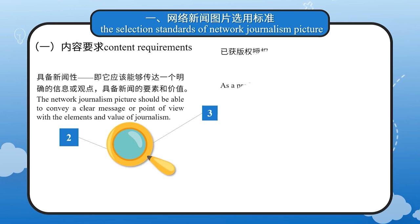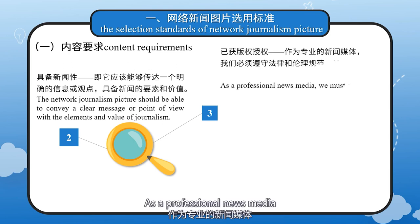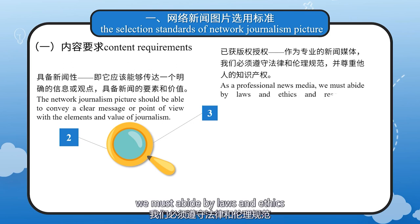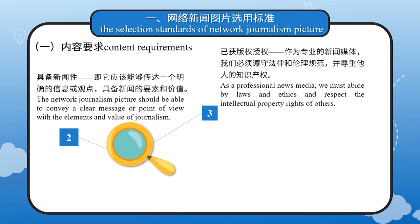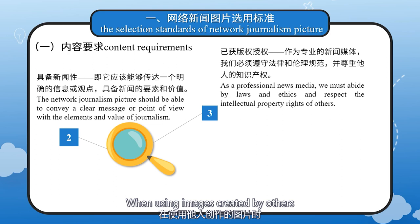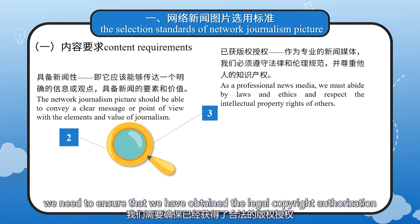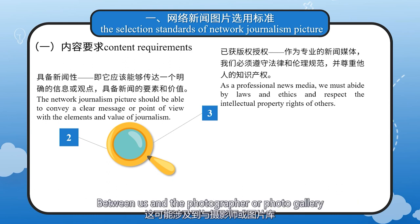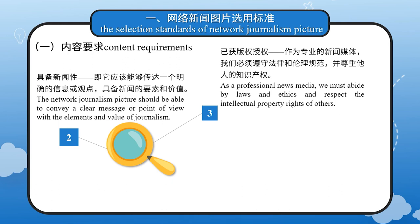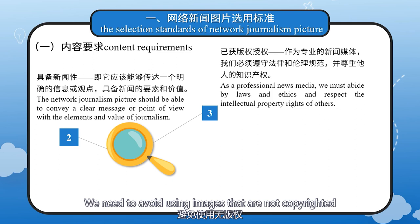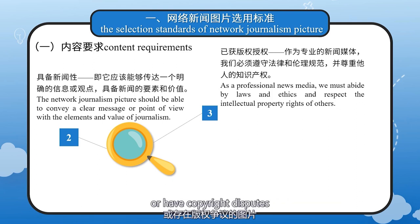Third, copyright must be authorized. As a professional news media, we must abide by laws and ethics and respect the intellectual property rights of others. When using images created by others, we need to ensure that we have obtained legal copyright authorization between us and the photographer or photo gallery. This process involves negotiation and payment. We need to avoid using images that are not copyrighted or have copyright disputes so as not to get into legal trouble.